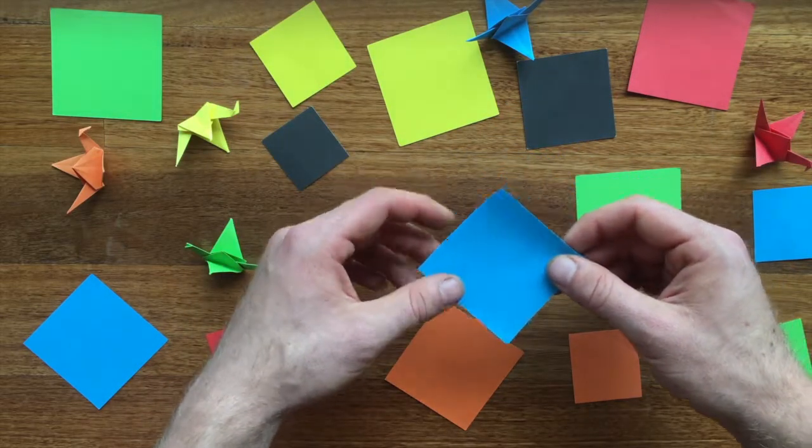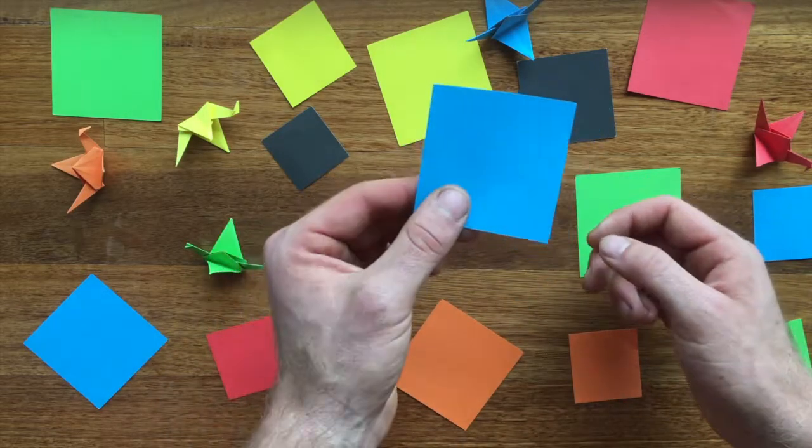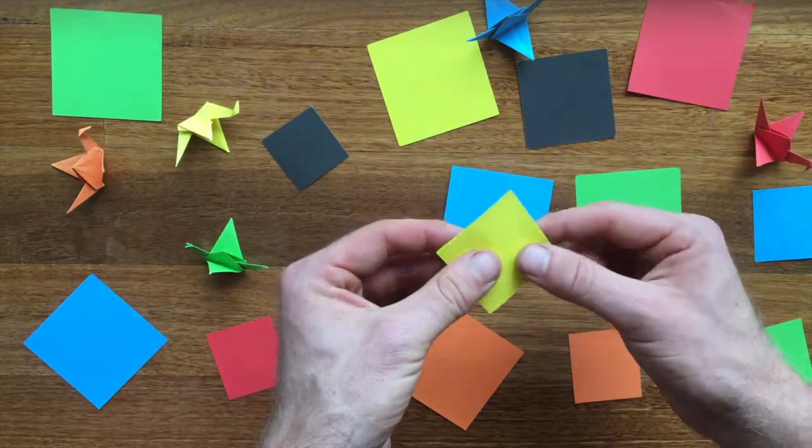Today we're going to talk about how to fold a crane. I've got a range of different papers here. These are seven centimeter squares and these smaller ones are five centimeter squares.